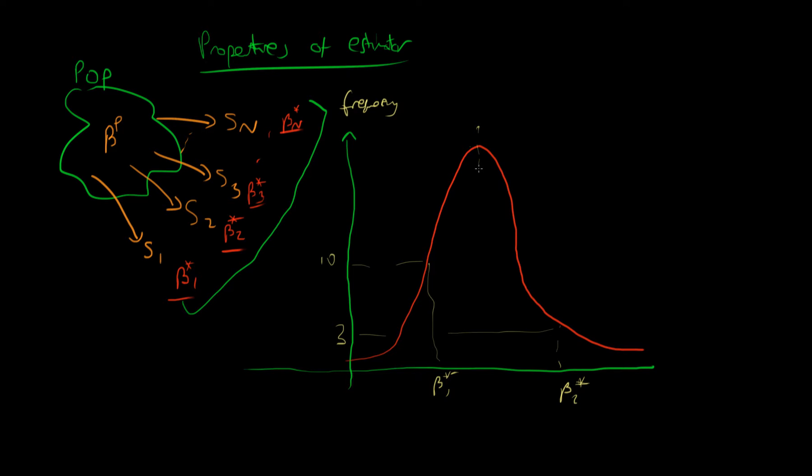Well, one property we would quite like our estimator to have is that on average we would hope that it gets it exactly right. So we would hope that on average our estimator outputs the population parameter. That's signified in a frequency graph by having a maximum when beta star equals beta P. Or mathematically, the expectation of our estimator is equal to the population parameter.